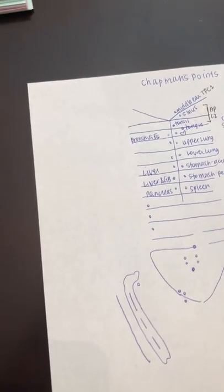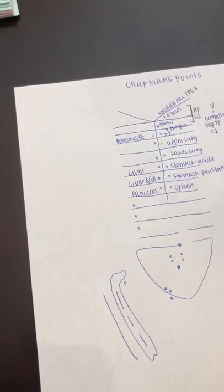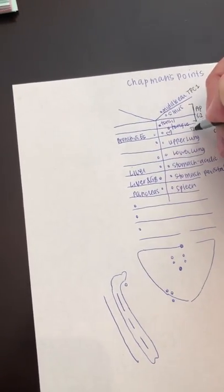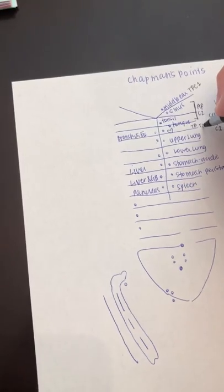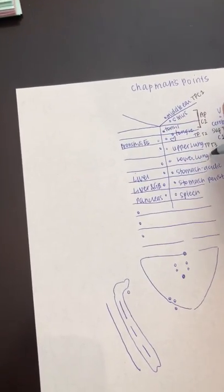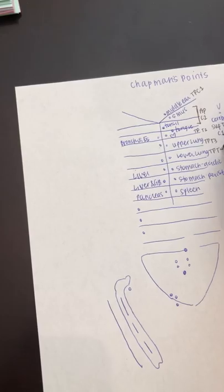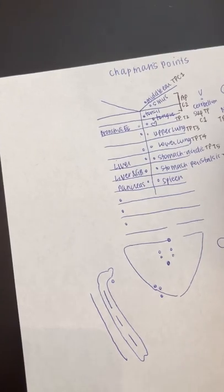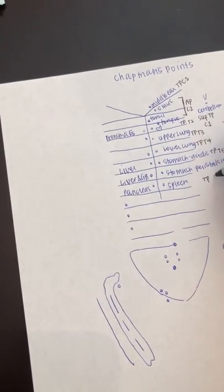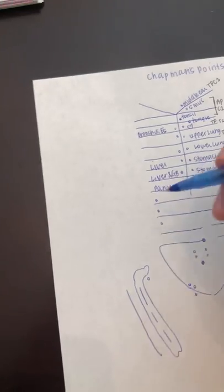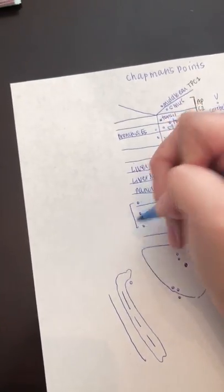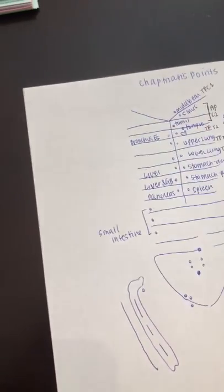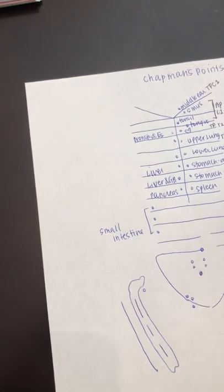And all of these points correspond to the same transverse process of the vertebra. So the second intercostal space would be transverse process of T2, transverse process of T3, transverse process of T4. I usually don't write this part down but I'm trying to keep it all straight for you guys here. Okay so then the eighth, ninth, and tenth intercostal space all correlate to the small intestine. And then once again transverse process of T8, 9, and 10.